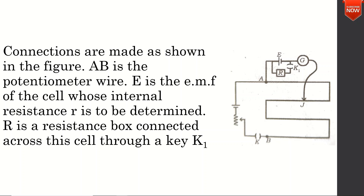AB is the potentiometer wire. E is the EMF of the cell whose internal resistance r is to be determined. R is the resistance box connected across the cell through a key K1. As you can see, AB is the potentiometer wire — a 10-meter uniform resistance wire.